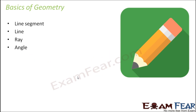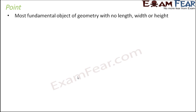As I said, line segment, line, ray, angle — these are the basics of geometry. And definitely not to forget the most basic element, that is a point. So, let's start with a point. A point is the most fundamental object of geometry with no length, width or height. It has no dimension basically.